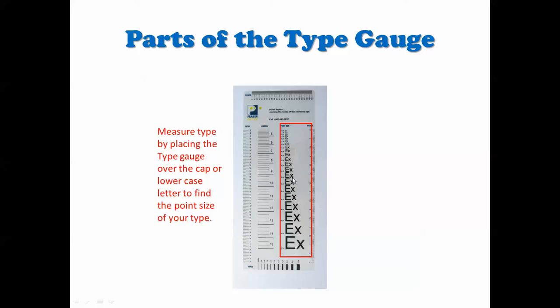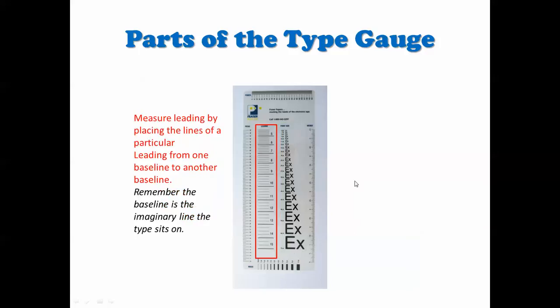Okay, over here is our leading, and you lay this over your type baseline to baseline. And when a bunch of baselines match up, at least two you'll need, you know that this is what the leading is. So let's just say that you have 12-point type with 11-point leading. They would be here baseline to baseline.